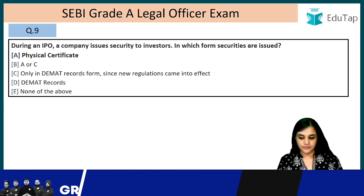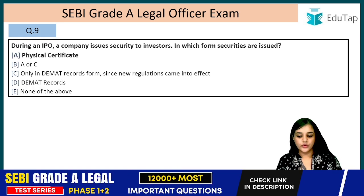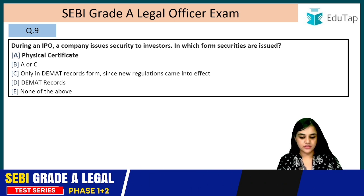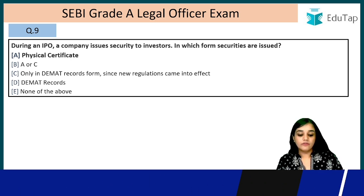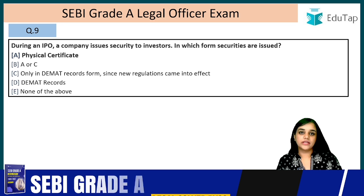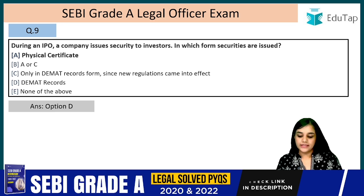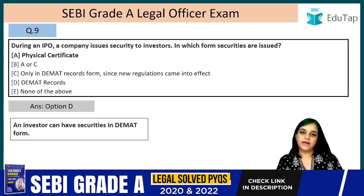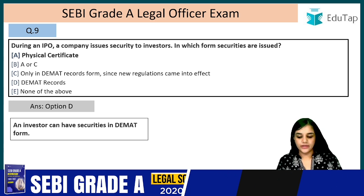Question 9: During an IPO, a company issues its securities to investors. In which format are those securities issued? The answer is D — DMAT records. An investor can have securities in DMAT form.